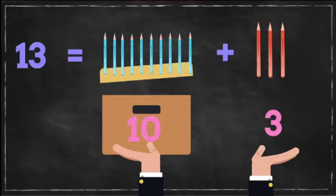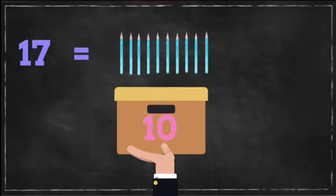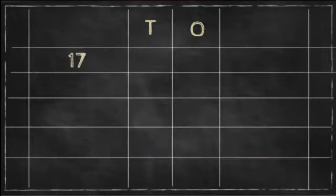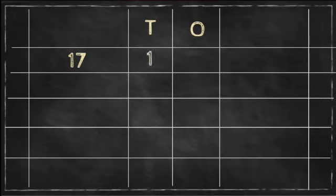Now children, can you represent number 17? What will you do? Yes, you are right. In one hand I will hold a box of 10 pencils, and in the other hand I will hold 7 pencils. So 1 ten and 7 more in the other hand make 17.